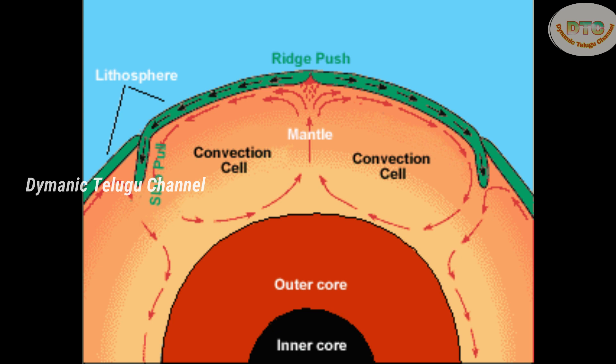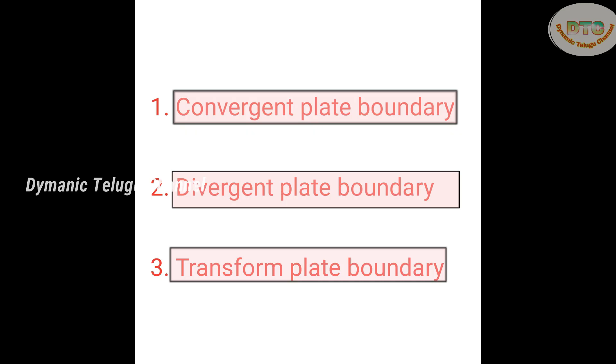When this process is repeated, the tectonic plates start to move. These plates differentiate into three types of boundaries: 1. Convergent Plate Boundary, 2. Divergent Plate Boundary, 3. Transform Plate Boundary.